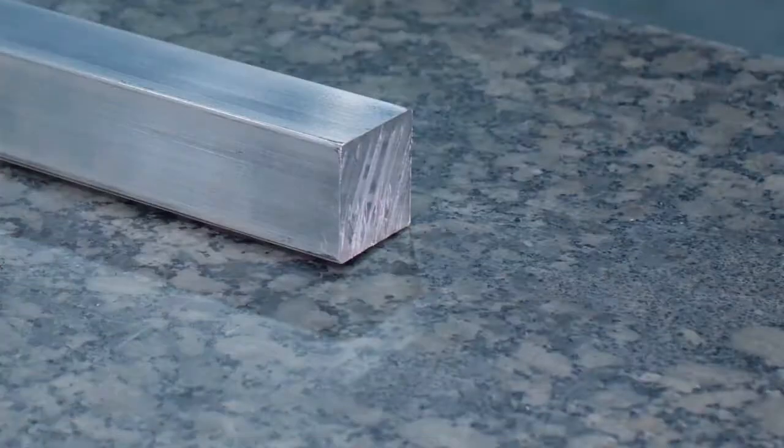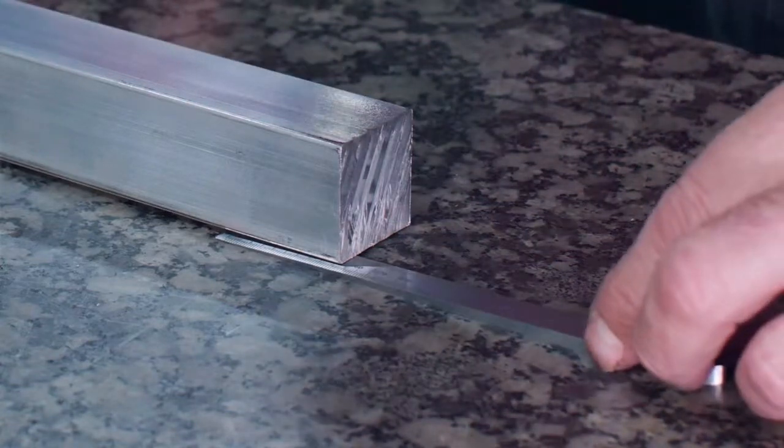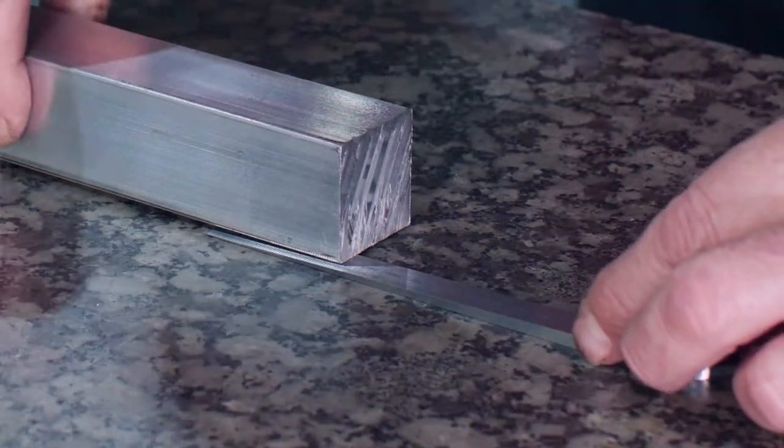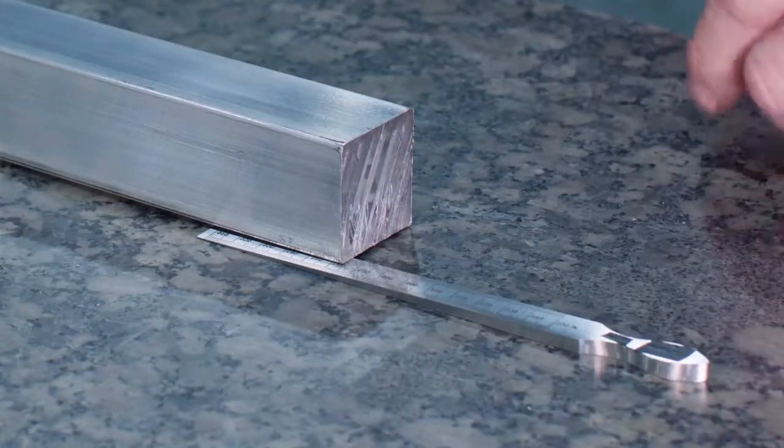To measure twist, you start by placing the profile on a flat surface, hold one end down so the end is flat on the granite table, and use a feeler or taper gauge to measure the maximum gap between the profile surface.